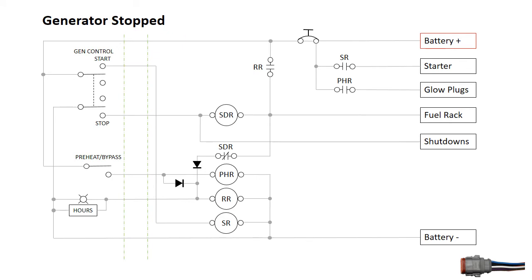The negative side of the battery is connected to the preheat, run, and start relay coils and to the start stop switch and meters on the control panel. As there is no oil pressure, the oil pressure shutdown switch is active, connecting the shutdown circuit to battery negative.